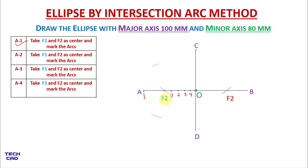Again open the same compass, come over F2, and mark an arc upside and downside as well. In the same way, take the distance A to 2 and follow the same procedure — take F1 and F2 as centers and mark arcs. You can see the arc here upside and downside. Then put the compass over F2 and mark an arc upside and downside as well.